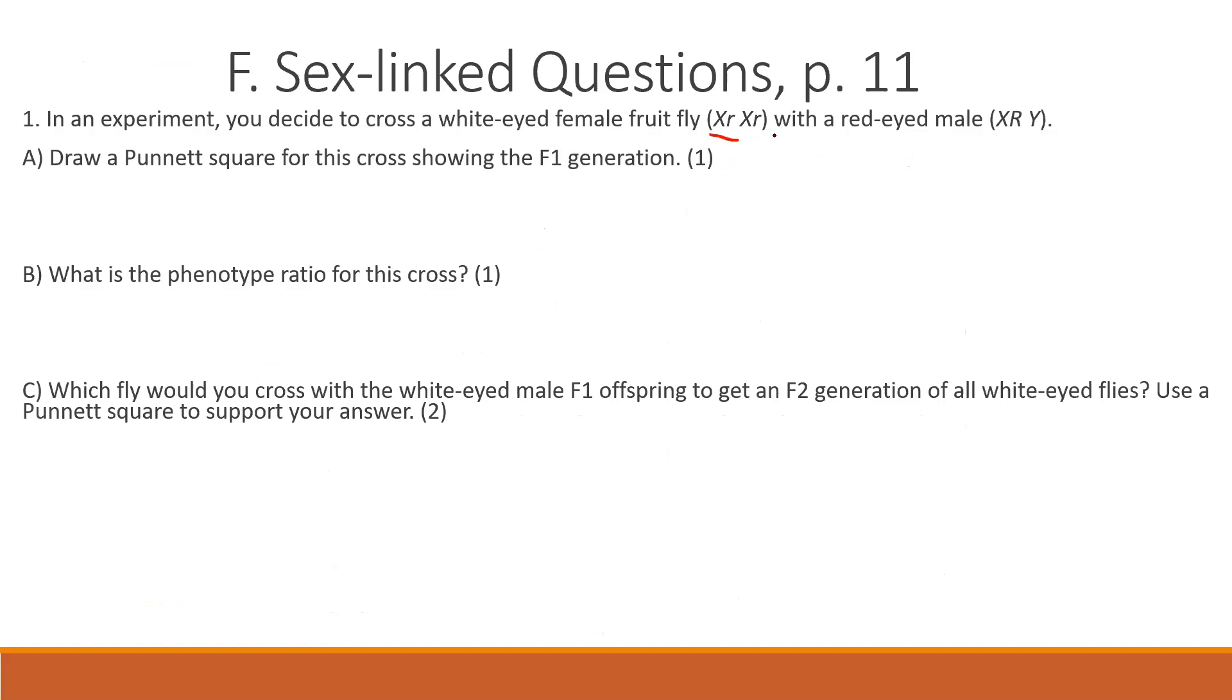Well, we've got a white-eyed female and a red-eyed male, so we're going to go X little r X little r times X big R and Y. I'm going to cross this and we're going to link these up. I'm going to denote the dominant first, recessive second, and we just repeat this.